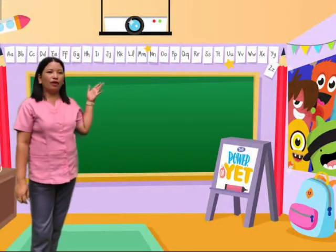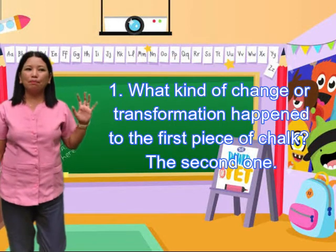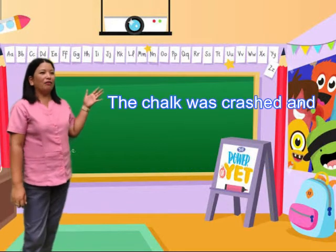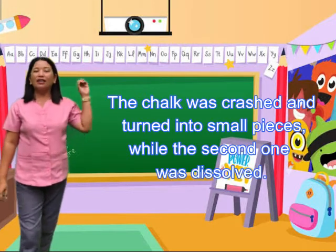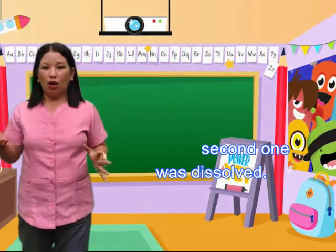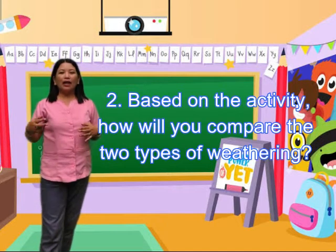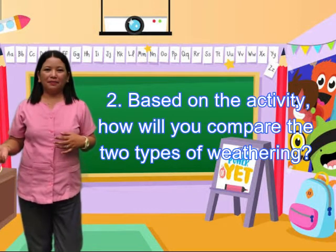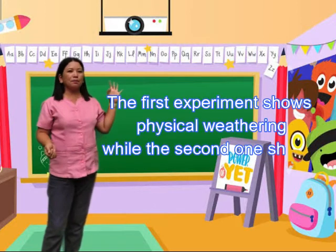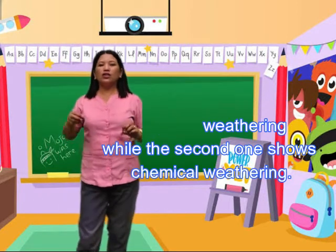Here are the questions. Question number 1: what kind of change or transformation happened to the first piece of chalk and the second one? The first chalk was crushed and turned into smaller pieces, while the second piece of chalk was dissolved. For question number 2: based on the activity, how are you going to compare the two types of weathering? Yes, very good! The first experiment shows physical weathering, and the second piece of chalk shows chemical weathering.